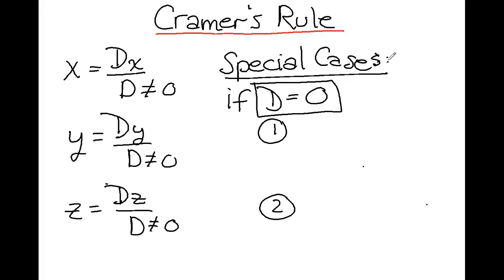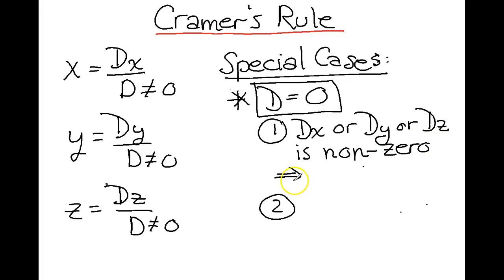We will find that D equals zero for any special cases. So D equals zero for a no-solution case. Dx or dy or dz is non-zero. Some of them may be zero, but we have to have at least one that's non-zero. This is a no-solution case.